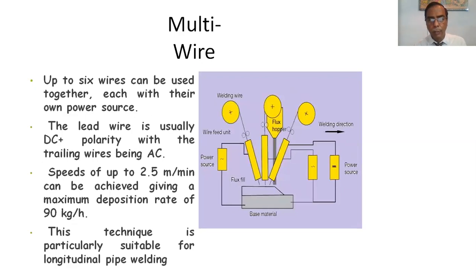Multi-wire. Up to six wires can be used together, each with their own power source. Left wires are usually DC plus polarity with the trailing wires AC. Speeds of up to 2.5 meters per minute can be achieved, giving a maximum deposition rate of 90 kg per hour. This technique is particularly suitable for longitudinal pipe welding.